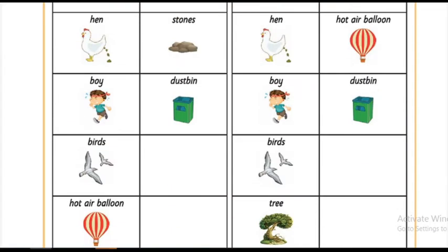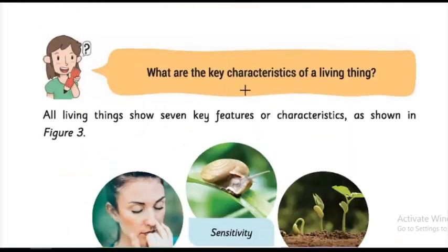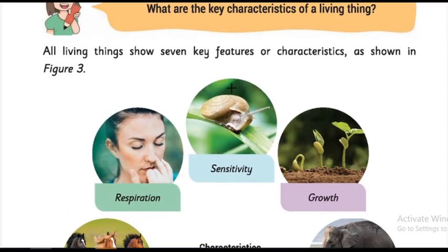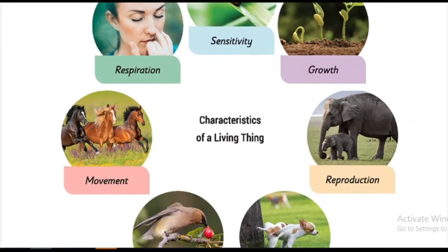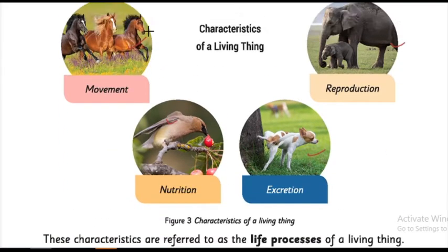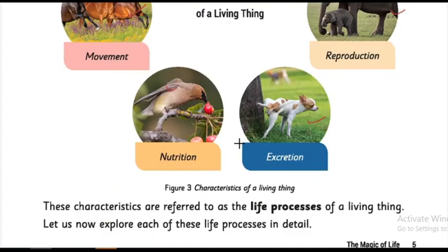What are the characters of a living thing? Sensitivity, growth, reproduction, excretion, nutrition, movement, respiration. These seven are the basic main characteristics of a living thing.